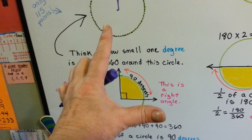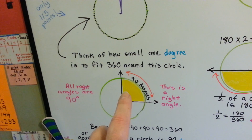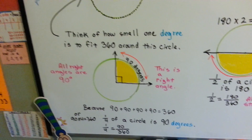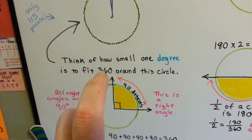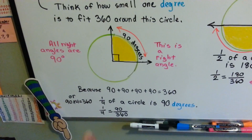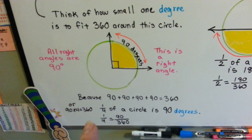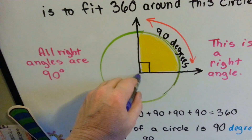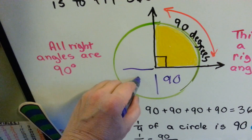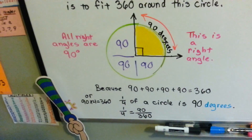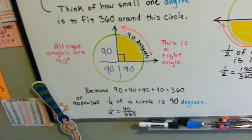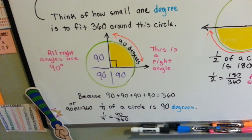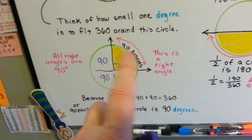See? That's 90 degrees. It's like a box. And they usually have a little box in the corner at the vertex to let you know that it's a 90-degree angle — a right angle. Because there's 360 degrees around a circle, one-fourth of the circle would be 360 split into four parts. Each one of these parts would be 90 degrees, and the whole thing would total 360. So 90 plus 90 plus 90 plus 90 is 360, or 90 times 4 is 360. So one-fourth of a circle is 90 degrees.